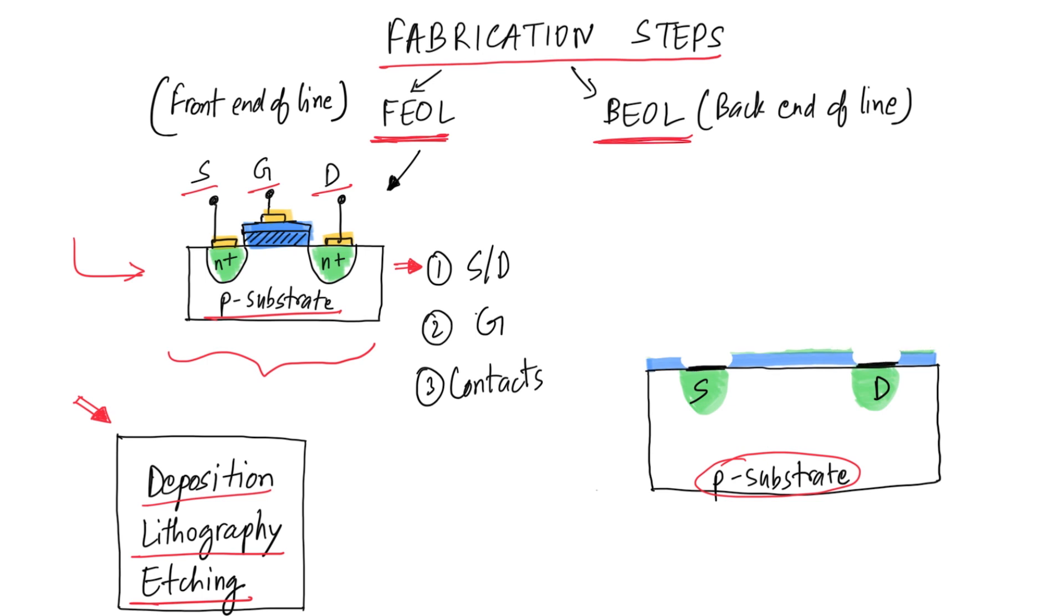Next, we repeat the oxidation process to create the dielectric layer all over the wafer again. This is followed by the deposition of a metal or polysilicon layer for the creation of the gate of the transistor. And next, we deposit a layer of photoresist on top of these two layers.